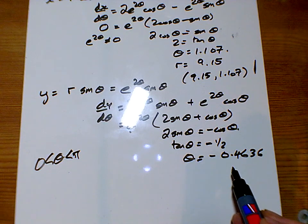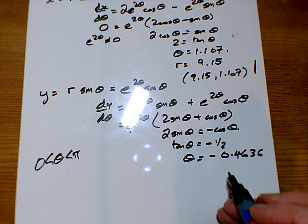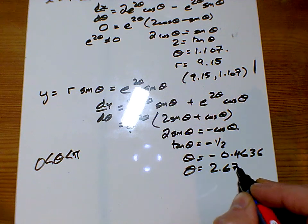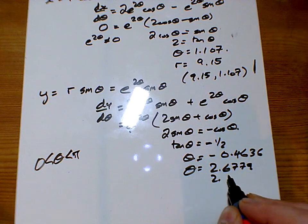Well, you just add pi to it, don't you? So if I do that, add pi, I'm then getting 2.6779, 2.68.